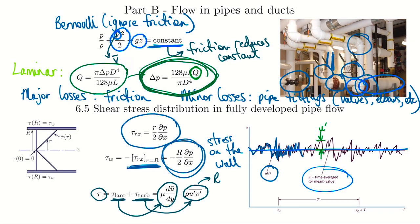This is called the Reynolds stress. It has a negative sign, but that's just because when you mathematically compute u-prime times v-prime it also comes out negative — so this is actually a positive contribution. In a turbulent fluid, when you add up the laminar component plus the turbulent component, the turbulent component adds to the total shear stress. So we expect higher shear stress in turbulent flows than in laminar ones.